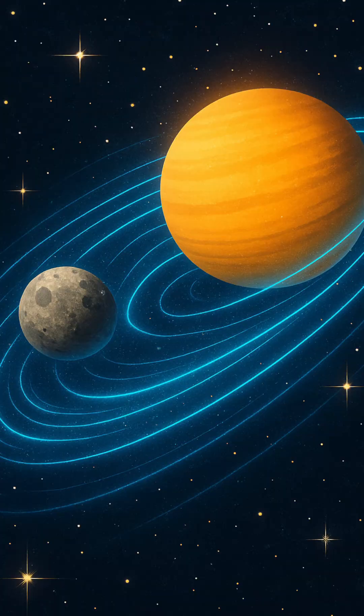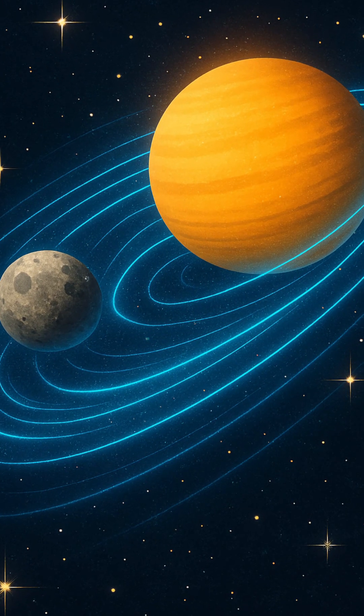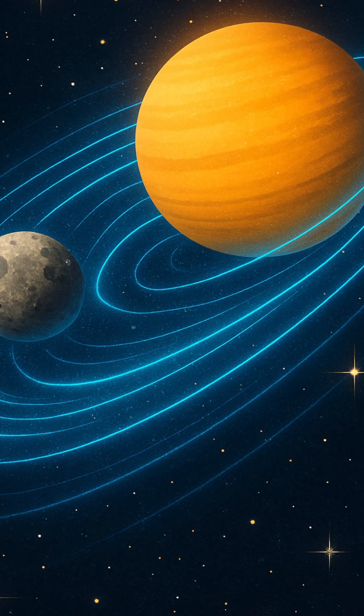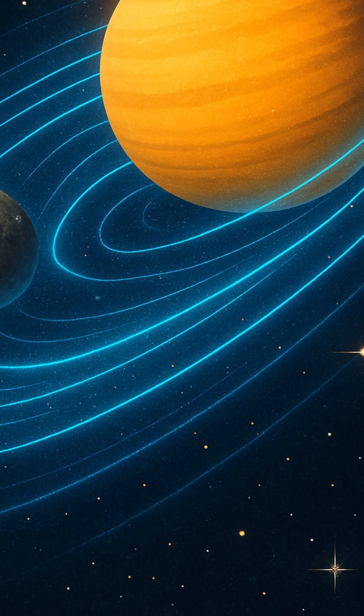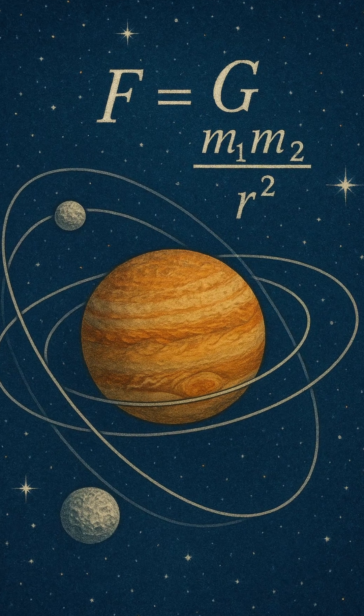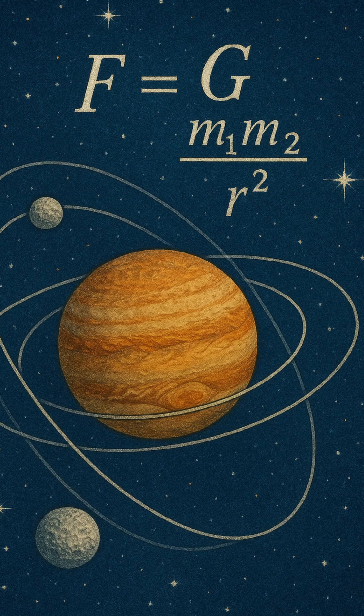Take Saturn, for instance. It's enormous, over 95 times the mass of Earth. Yet it's so low in density that it would float in water. This strange fact reveals the nature of its composition: mostly hydrogen and helium, spread out across a vast volume.